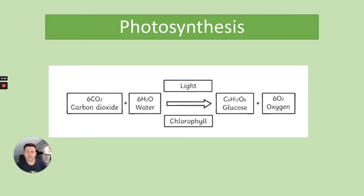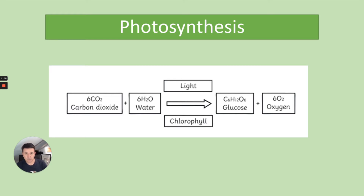Looking at the equation: carbon dioxide from the air plus water that comes from the roots is then converted through light as a source of energy and chlorophyll, which is the pigment found in chloroplasts where photosynthesis occurs, to produce glucose and oxygen.